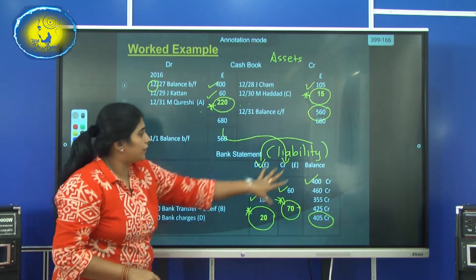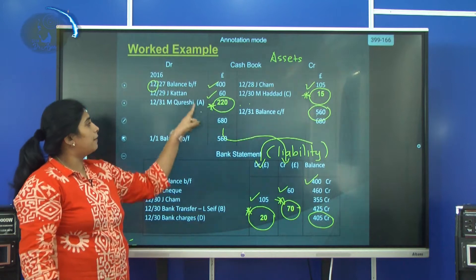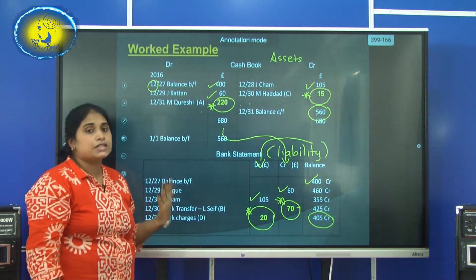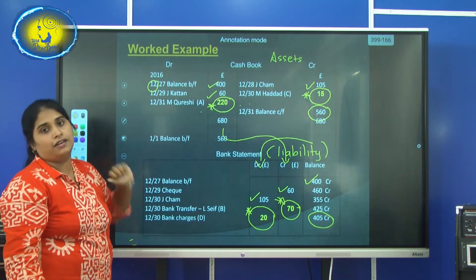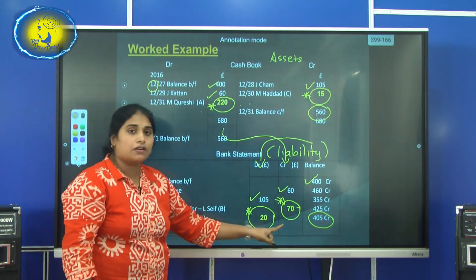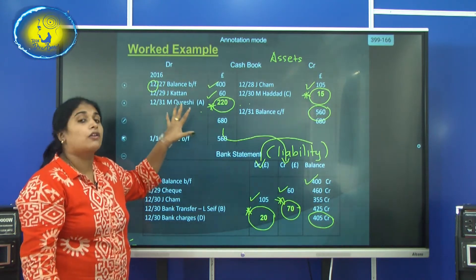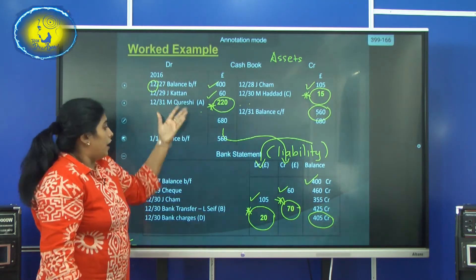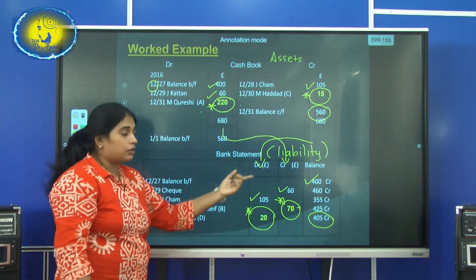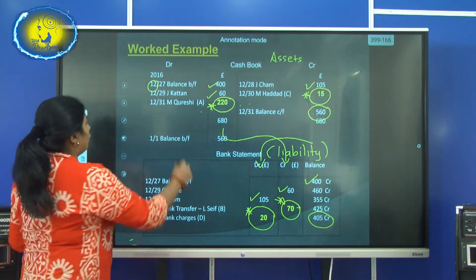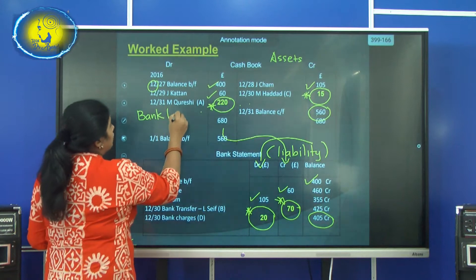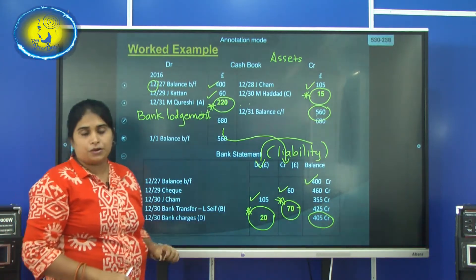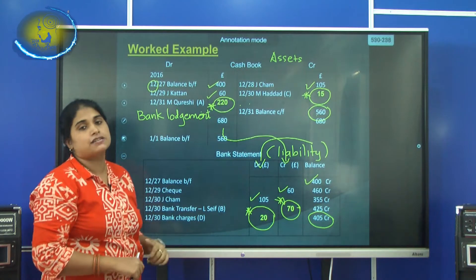Now we will identify what type of reasons these are. Looking at the debit side, a person named Qureshi has given a cheque to us. As soon as we receive the cheque, we record it in the cash book bank column, but it has not been recorded in the bank statement. That means this is called a bank lodgement or unrealized cheque — the cheque was deposited but it takes time, so when you received the bank statement for December it had not yet been realized. Always remember: if you get a circled number on the cash book debit side, it is definitely a bank lodgement.